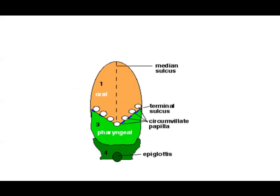The median sulcus is where the two lateral swellings fuse. The sulcus terminalis is the junction of anterior two-thirds and posterior one-third. At the sulcus terminalis, the circumvallate papillae form — roughly at the level of the third arch. These circumvallate papillae get their nerve supply from the glossopharyngeal nerve, as they are in the area of the third arch.